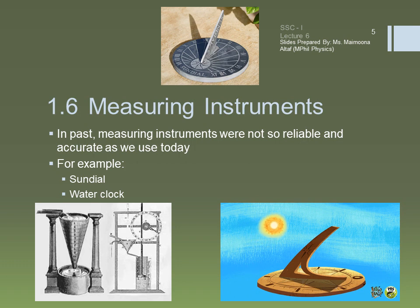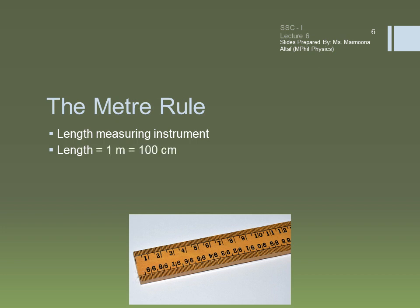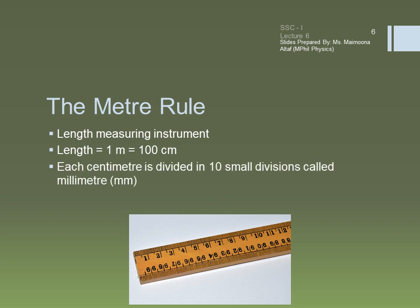Now we will describe some of the measuring instruments used in the physics laboratory for the measurement of length. Starting with the meter rule — a meter rule is a length measuring instrument as shown in the figure. It is commonly used in laboratories to measure the length of an object or the distance between two points.